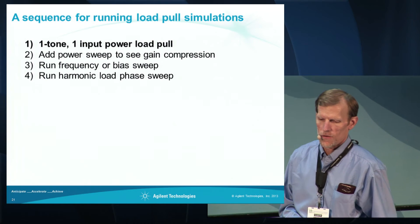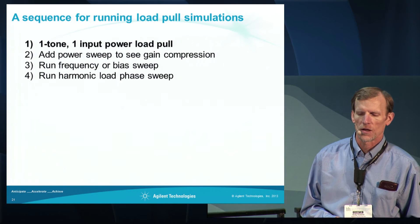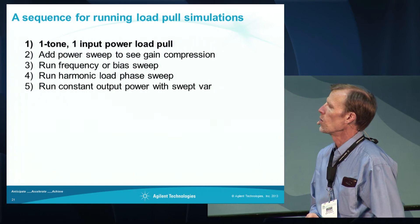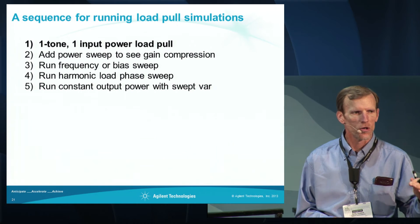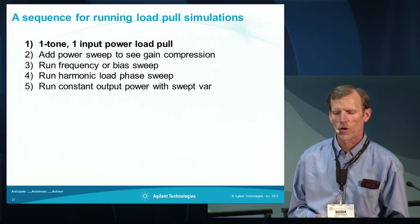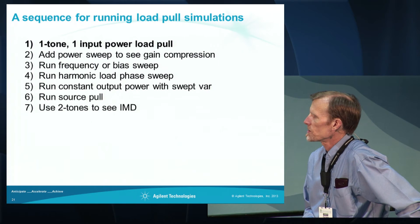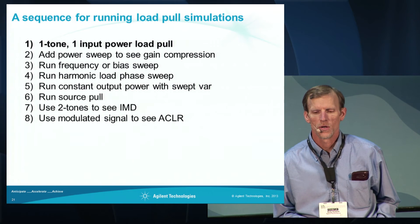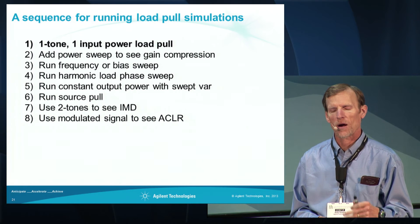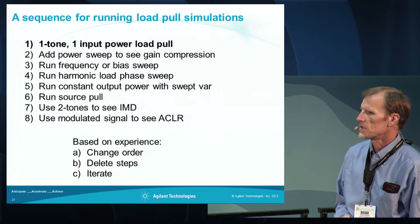The performance of your PA and device will vary with the reflection coefficient at the harmonic frequencies, and you can run a harmonic load phase sweep. We can run a constant output power load-pull, where we optimize the power delivered to the load as we sweep the load, so all contours correspond to the specific power we want delivered. We can run a source pull if desired. We can do a two-tone intermodulation distortion simulation. We can also use modulated signals to see ACLR or EVM, and we can get EVM data from one-tone swept harmonic balance power simulations. You could certainly change this sequence, delete steps, or iterate.